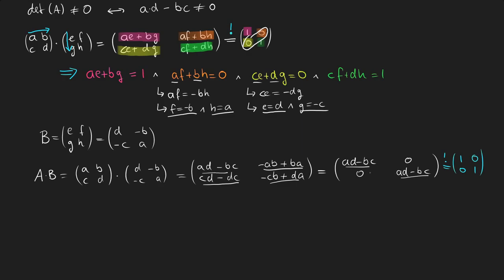And this can be achieved by dividing our initial B by AD minus BC. And then we have B equals this term here.